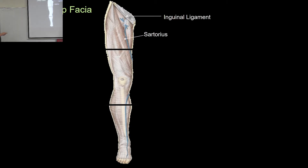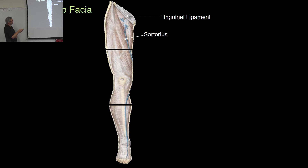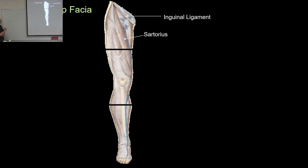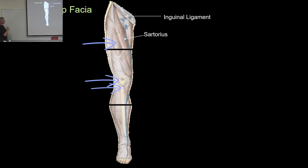The ligament attaching from the anterior superior iliac spine to the symphysis pubis is called the inguinal ligament. It marks the boundary of the pelvis and the thigh, and that's the ligament that marks the boundary between the external iliac and the femoral artery in terms of naming.